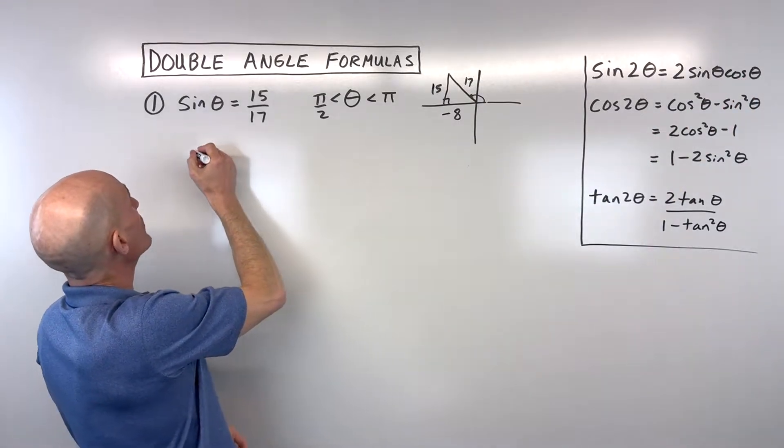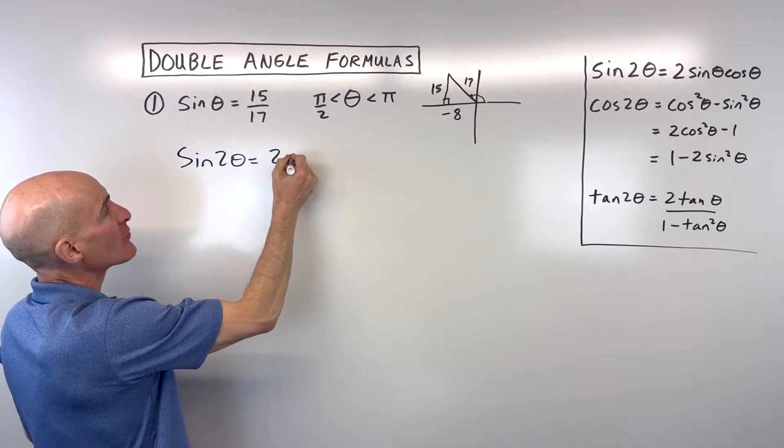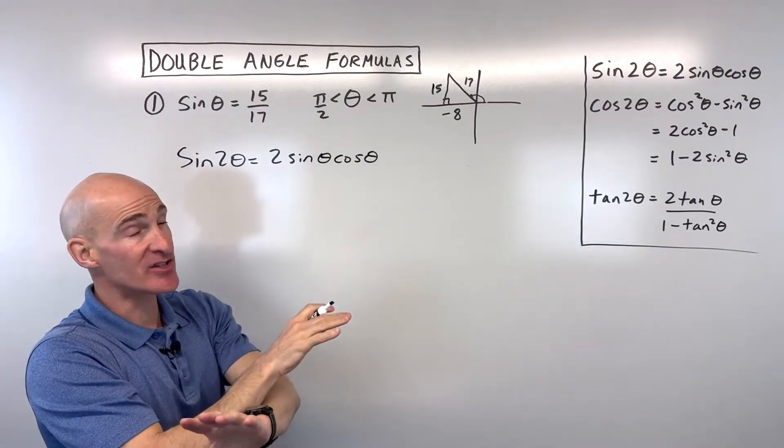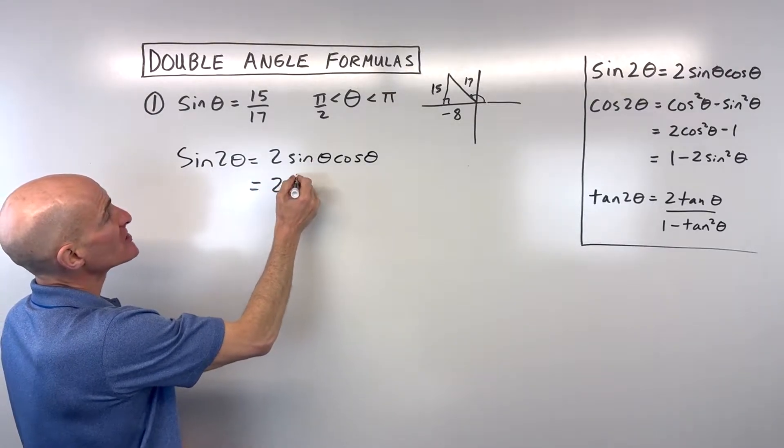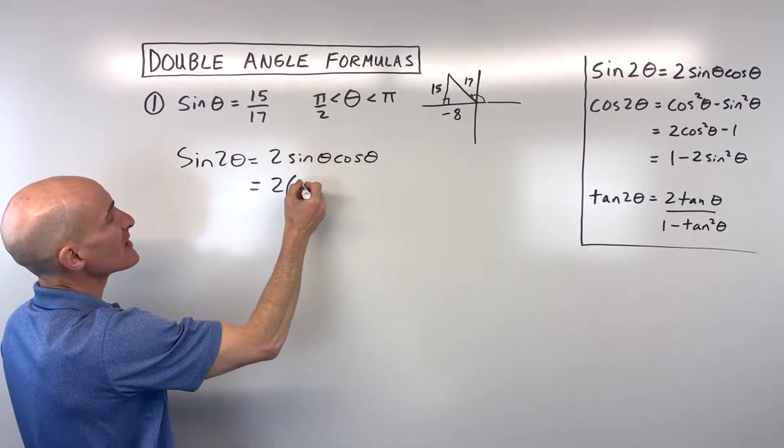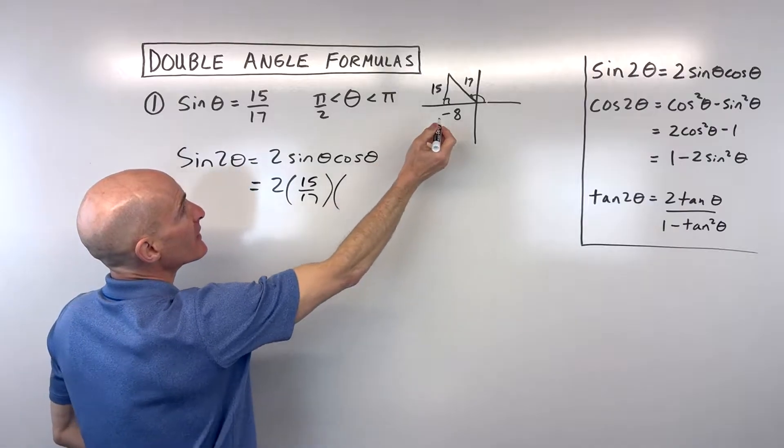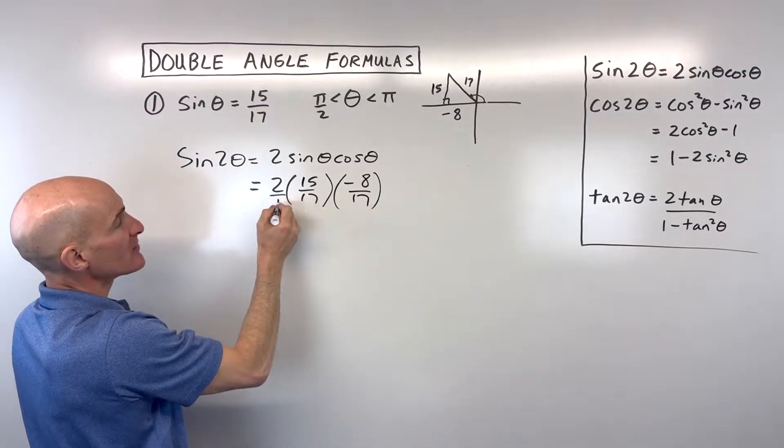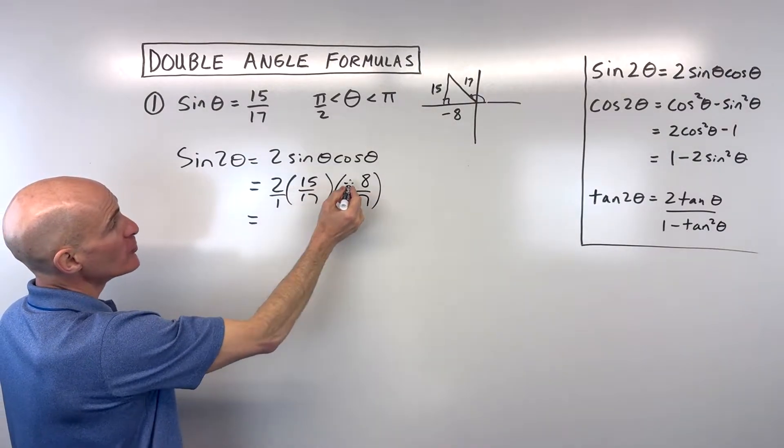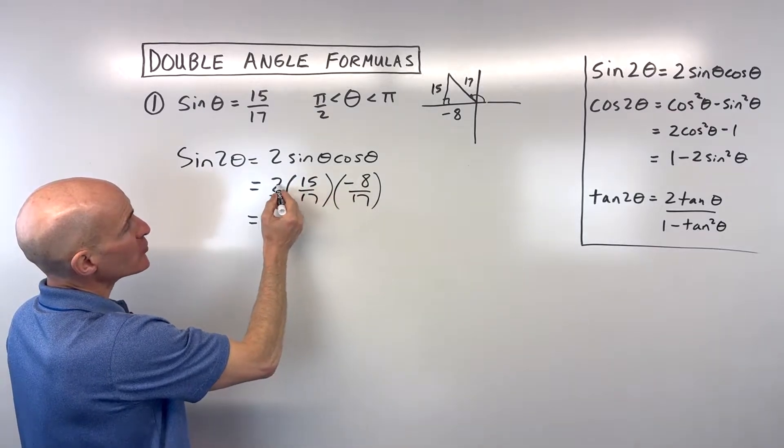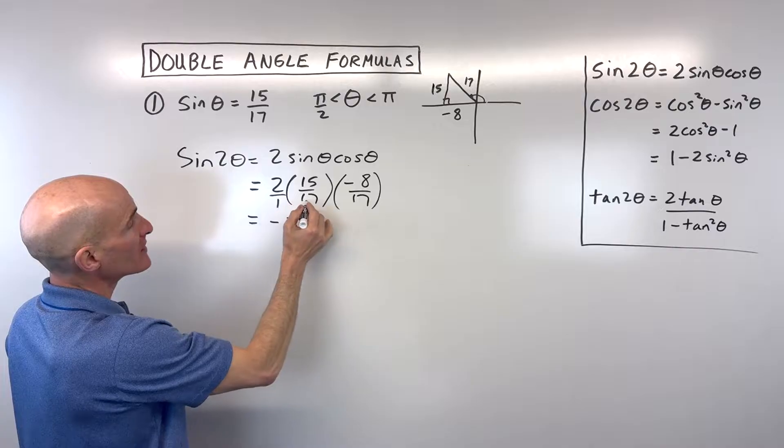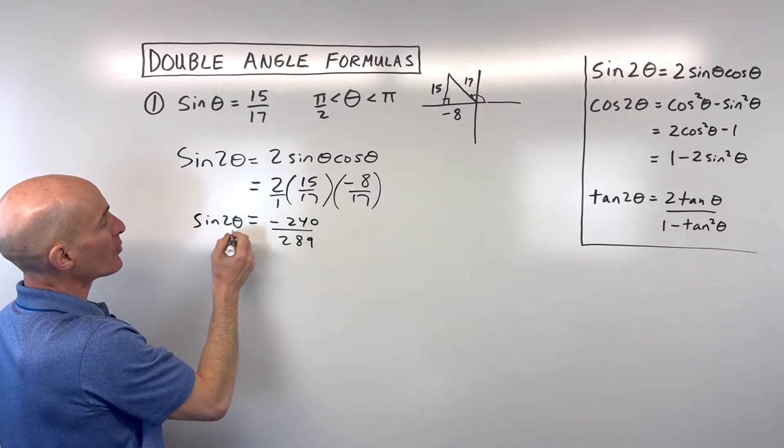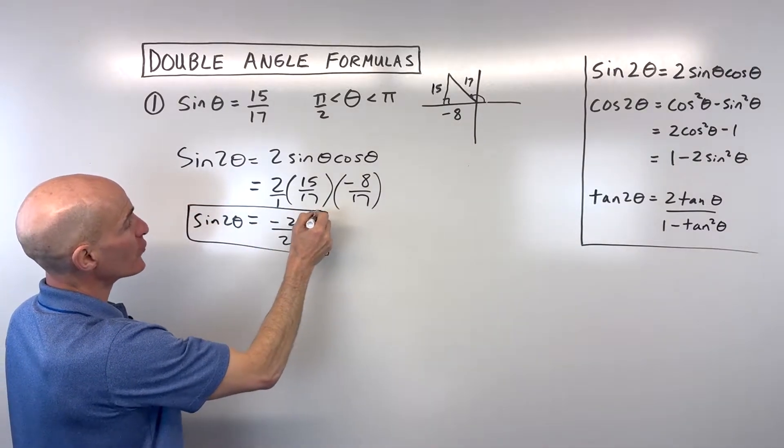Let's figure out sin 2θ by expanding it. Remember these are identities. Identity just means that the left side and the right side are identical. You can interchange them, they're equivalent. So we have 15/17 times negative 8/17 times 2, which is 2/1. If you multiply all the numerators, we get negative 240. 1 × 17 × 17 is 289. The sine of double our angle, or 2θ, is negative 240/289.